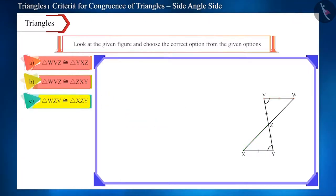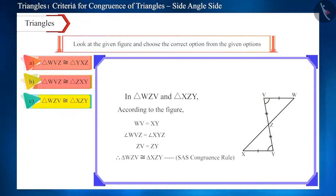Now, let's look at the last remaining option. According to the figure, side WV is equal to side XY, angle WVZ is equal to angle XYZ, and side ZV is equal to side ZY. So, according to the SAS congruence criterion, these triangles are congruent. So, the third option is the correct option.